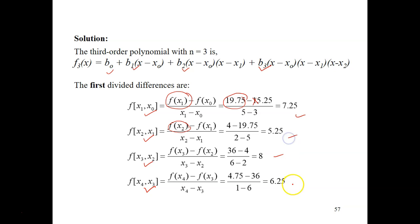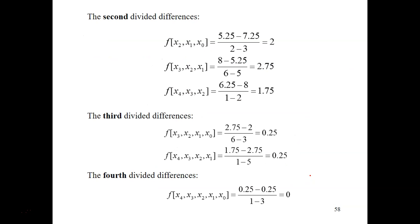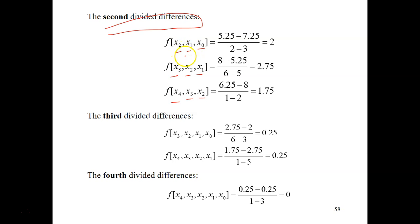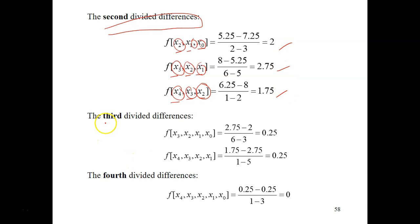Next is the calculation of the second divided differences, which involves triplets: x0, x1, x2 — then x1, x2, x3 — then x2, x3, x4. Make sure you are taking only three data points in sequence for each. Plug in all the values and you will get three values for the second divided differences.